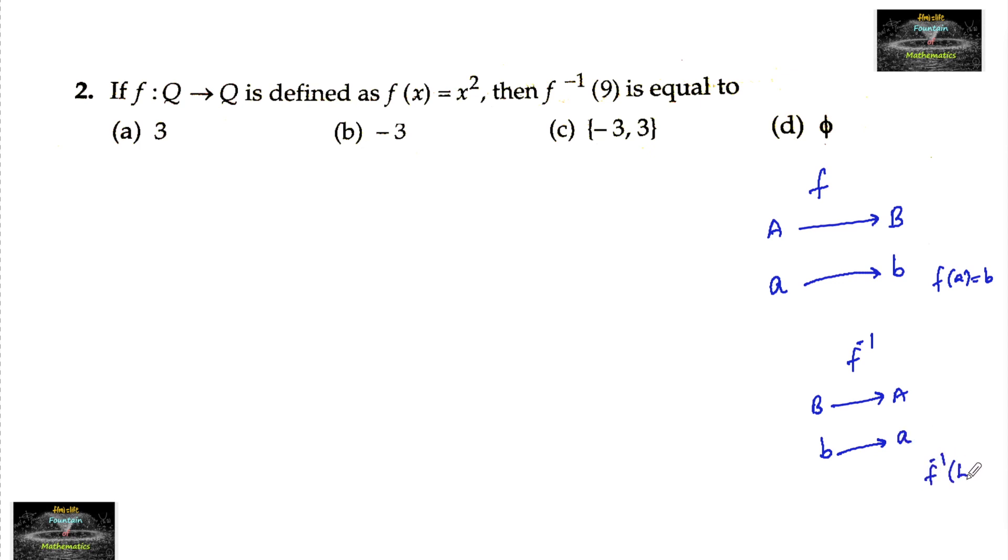That can be taken as f⁻¹(b) = a. That means f⁻¹(b) is the image of some element in A under the function f. For f⁻¹(9), if we want...